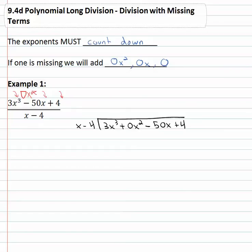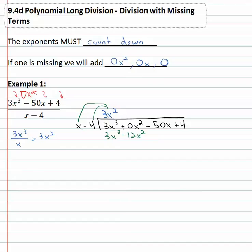Once we've done that, we can work through all the same long division steps we've seen before. Start by dividing the front terms: three x cubed divided by x leaves three x squared. Then we need to distribute that onto the divisor, giving us three x cubed minus twelve x squared. The next step is to change the sign on each term, making it negative three x cubed and positive twelve x squared, so the x cubed terms divide out and we're left with twelve x squared.